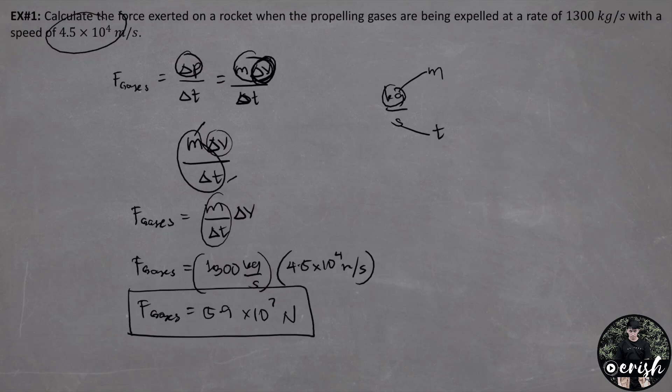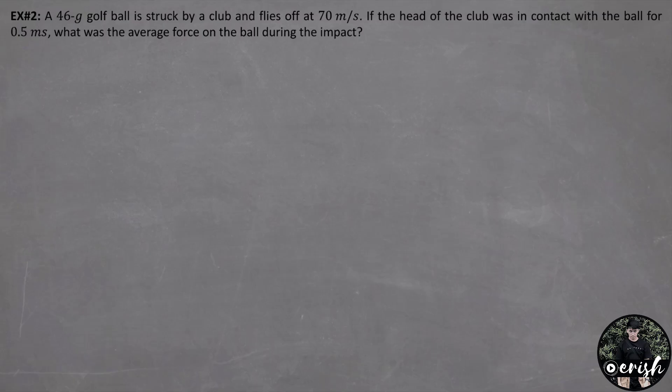This is example number 1. Example number 2: A 46-gram golf ball is struck by a club and flies off at 70 meters per second. If the head of the club was in contact with the ball for 0.5 milliseconds, what was the average force on the ball during the impact?